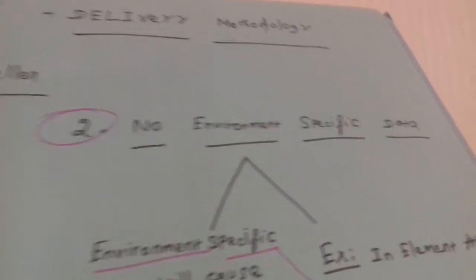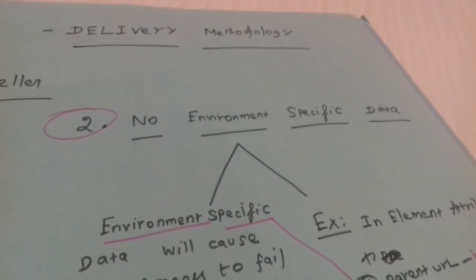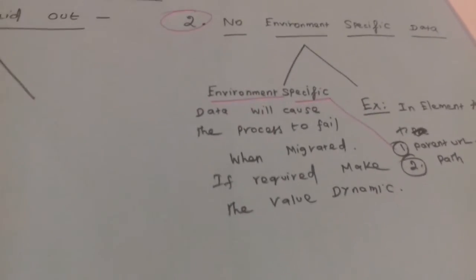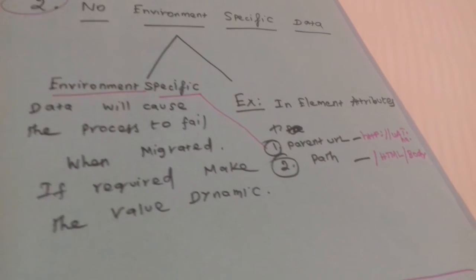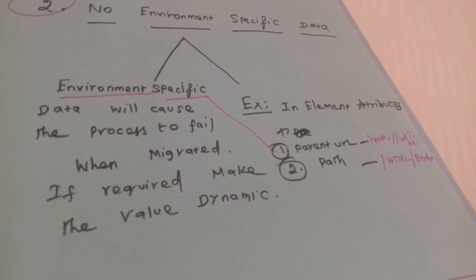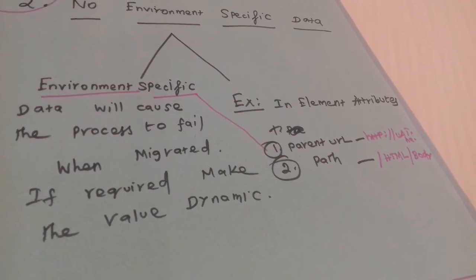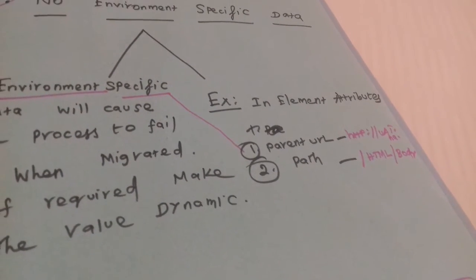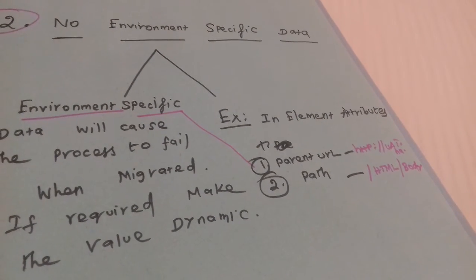The second thing is you have to make sure no environment-specific data. What is environment-specific data? When you have a parent URL and you're using application modeler to scrape or extract some data, that time in the element attributes you have match index, match reverse, and a lot of things will come.